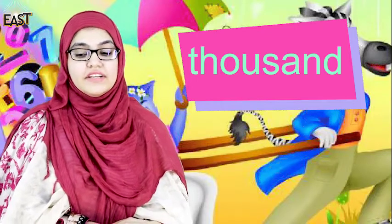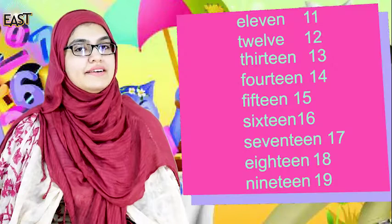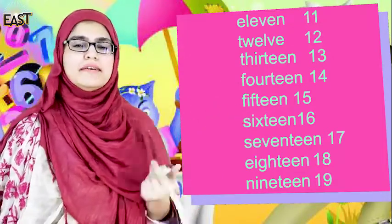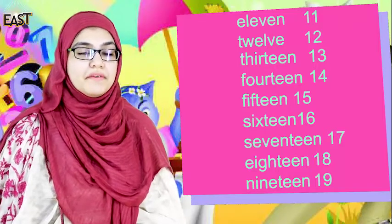ठीक है, ये number spellings हमने बहुत पहले से पढ़ी हैं। आज इन number spellings को दुबारा से review करते हैं, क्योंकि Class 2 में हमारे पास number spelling thousand तक आ रही है। Tens की values, ones की spellings, hundreds की spellings — फिर हम thousand पे जाएंगे। आज हमें one से hundred तक, hundred से nine hundred तक सभी spellings को review करना है। इन spellings में patterns को भी ढूंढना है — spellings के patterns कैसे होते हैं?